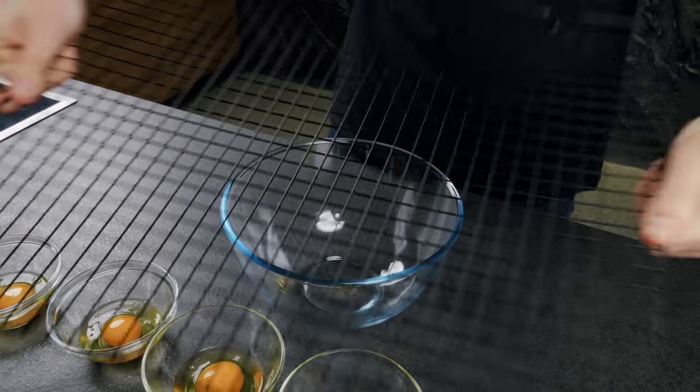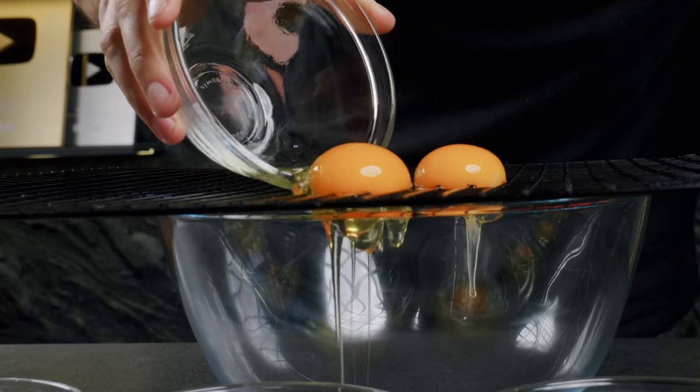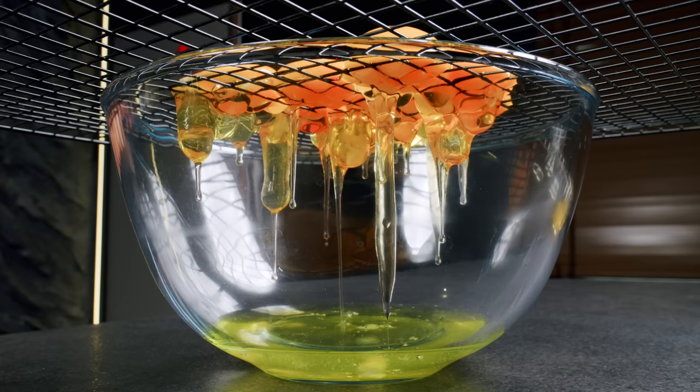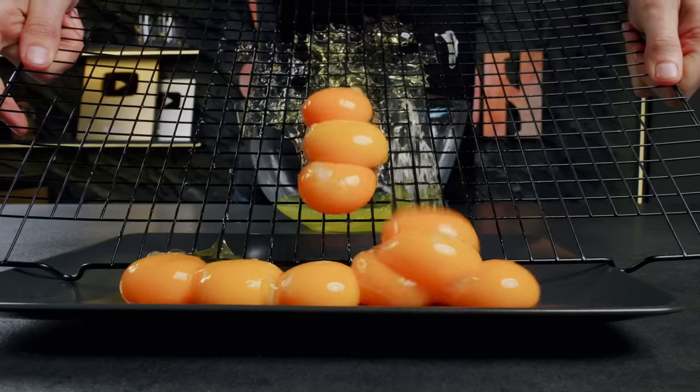And to easily separate the yolk from the white, you can use a cooling rack. Simply pour the egg onto the rack and watch as the yolk stays on top while the white flows down. This method is perfect for when you need to separate multiple eggs at once.